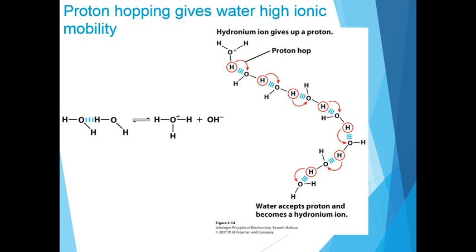The ionization of water can be measured by its electrical conductivity. Pure water carries electrical current as hydronium ions migrate towards the negatively charged cathode and hydroxide ions towards the positively charged anode. The movement of hydronium and hydroxide ions in the electrical field is extremely fast compared with that of other ions, such as Na⁺, K⁺, or Cl⁻. This high ionic mobility results from proton hopping.